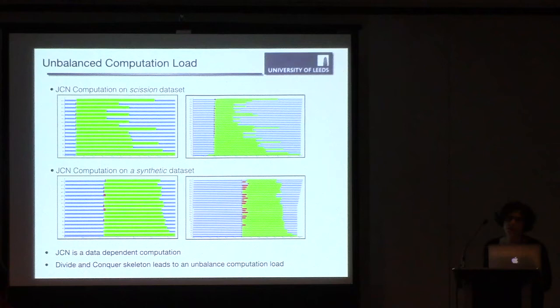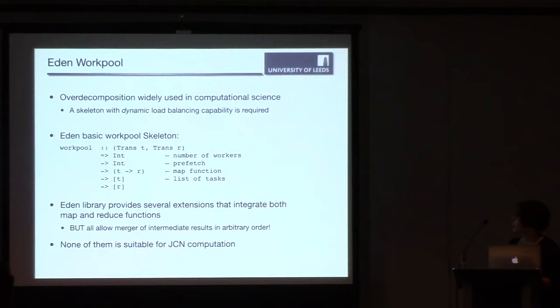And for data, depending on the feature of the data set, it can be quite different in different subsets of data. On the lower part, you can see the computation of JCN for synthetic data set, which has a uniform change of gradient. And there, we can get a much more balanced computation. So in short, because JCN is a data-dependent computation, divide and conquer skeletons lead to an unbalanced computation load. It was similar to one of the effects seen in one of the work presented this morning.